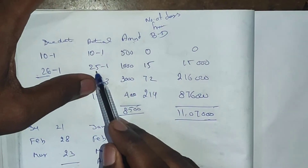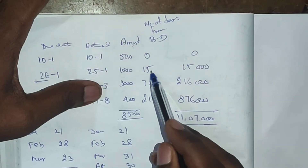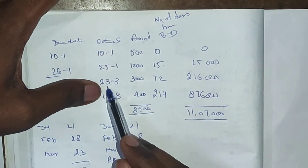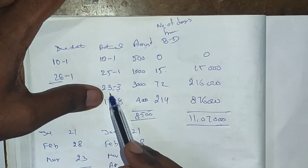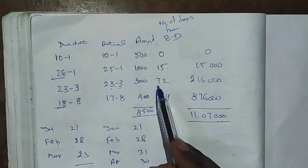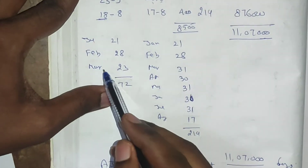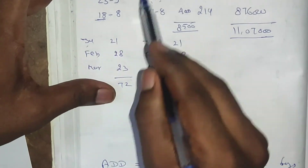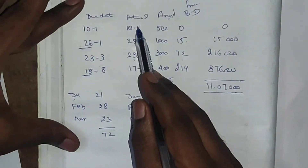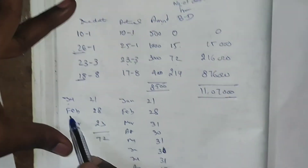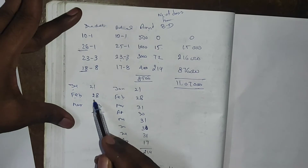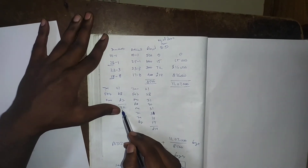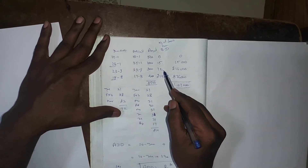Take 10th January as day zero. From 10th January to 25th January is 15 days. From 10th January to 23rd March: January has 31 days total, so the remaining days in January are 21 days, February has 28 days, and March up to the 23rd is 23 days — totaling 72 days.